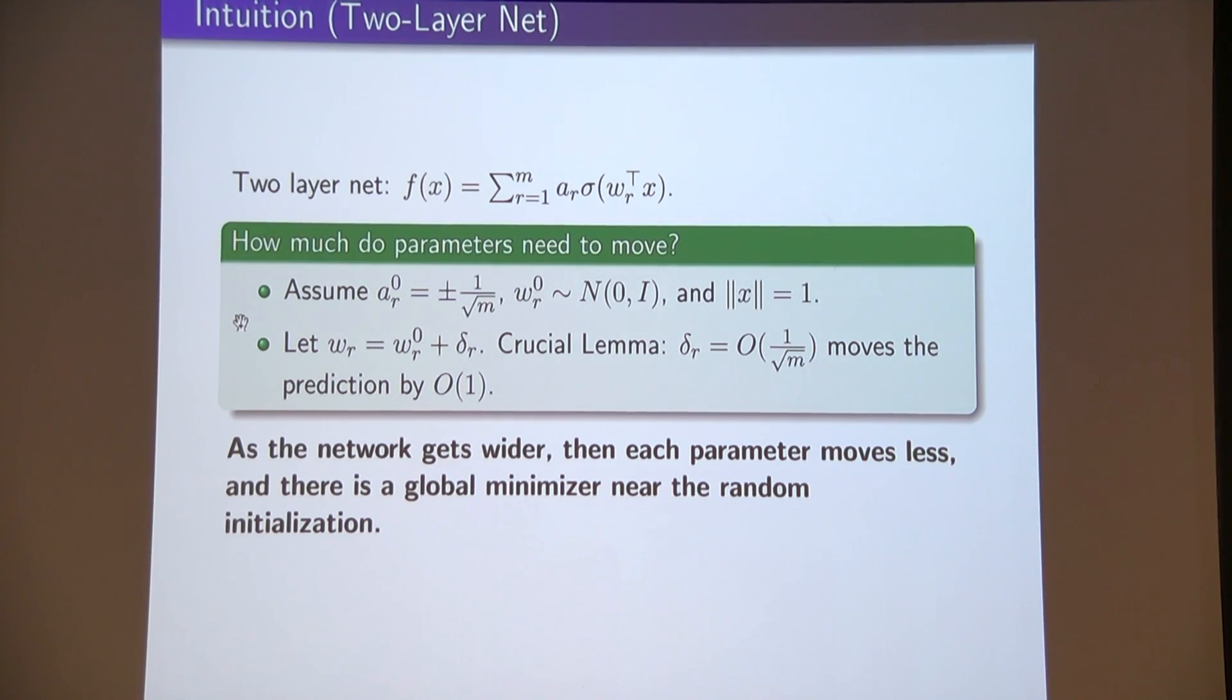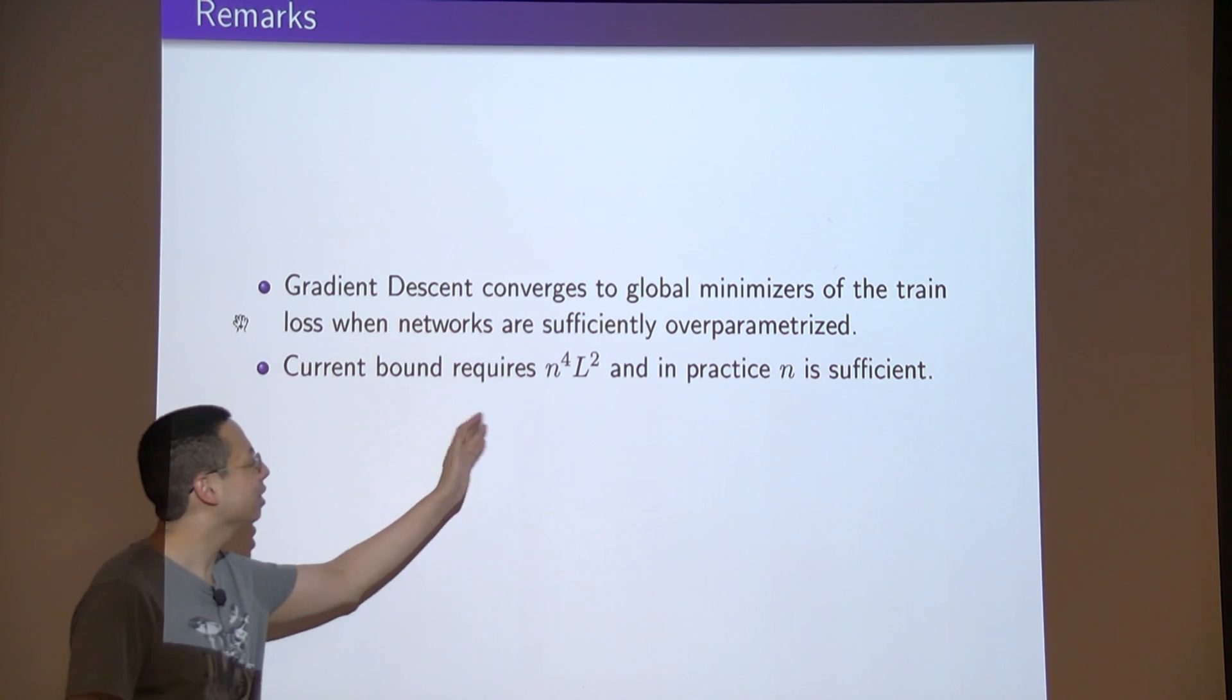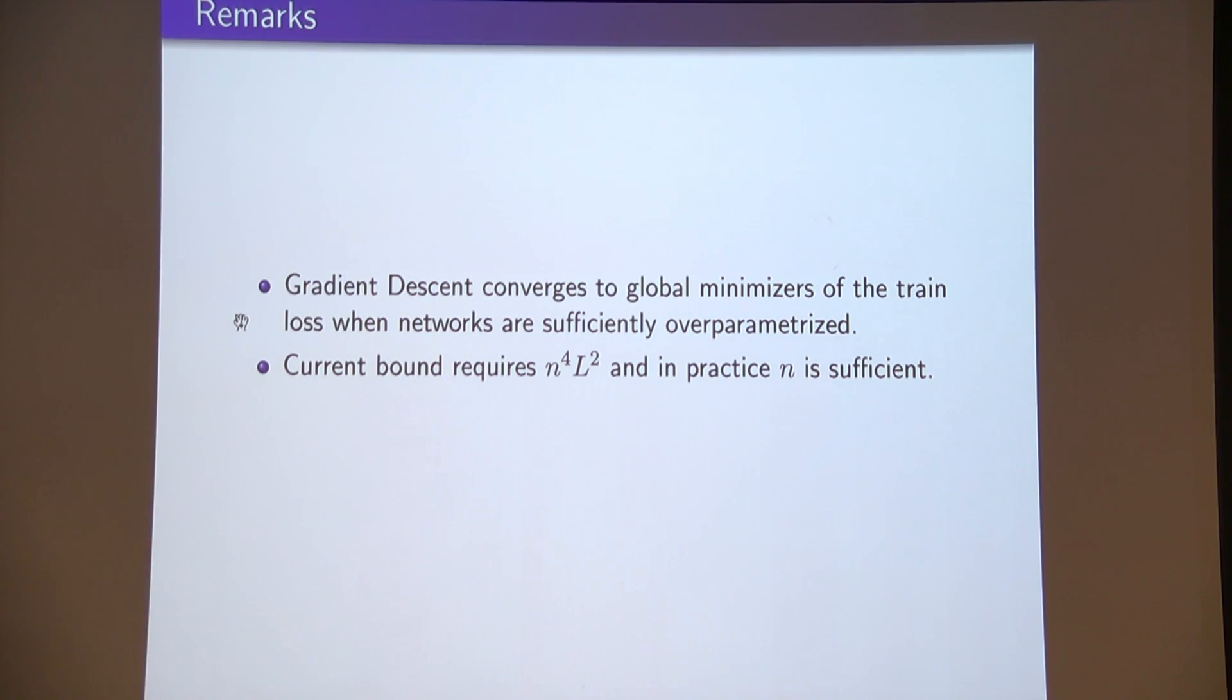As the network gets wider, each individual neuron moves less, and there is a global minimizer very close to where you start. Gradient descent being local search just goes there. Of course, these are very pessimistic bounds. What we had was n to the fourth L squared. That's roughly like a mole or something, like 10 to 24, roughly. In practice, much smaller things work.